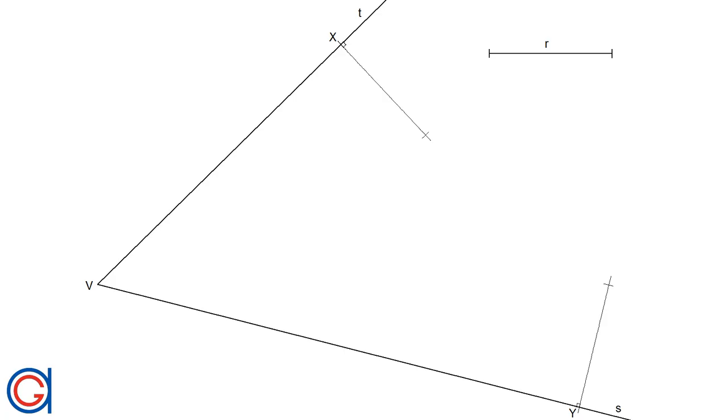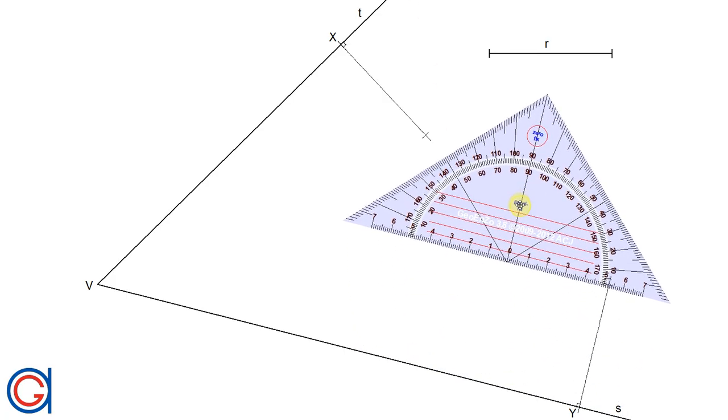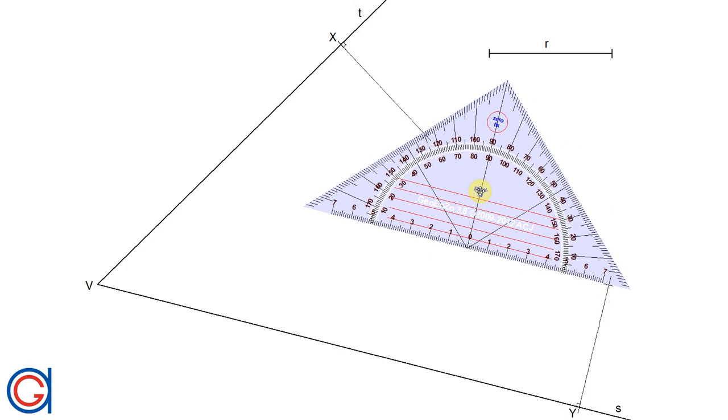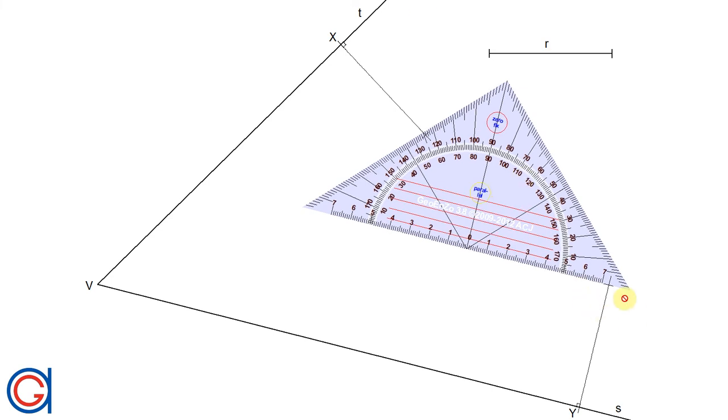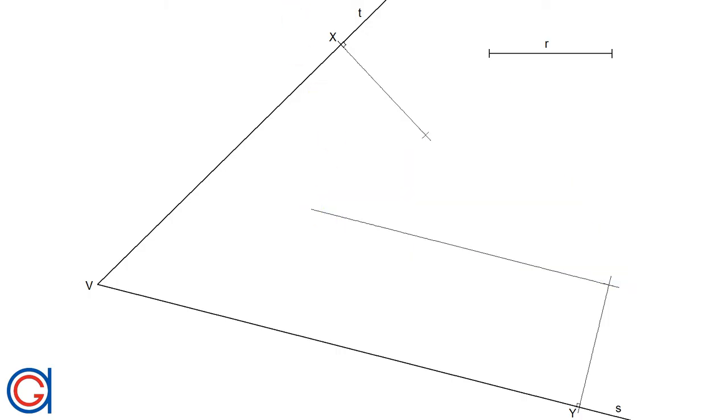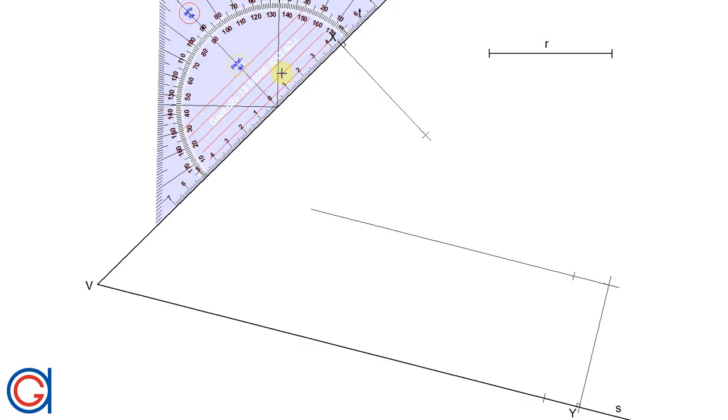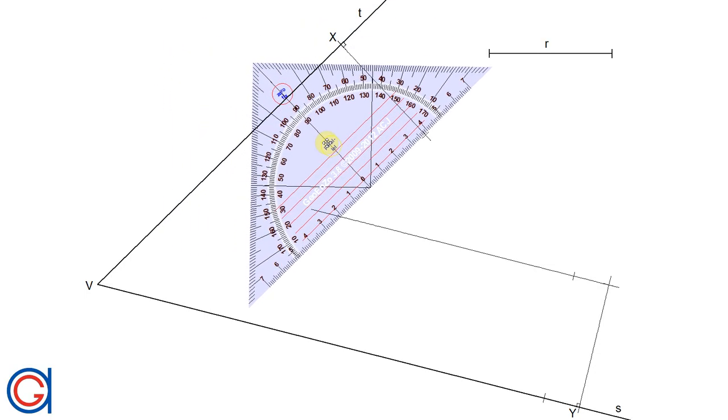And now, from these two new points, we are going to draw parallel lines. To the line S here, we are going to draw a parallel line. And again, we are going to repeat this process. From the other point, we are going to draw a parallel line to the line T.